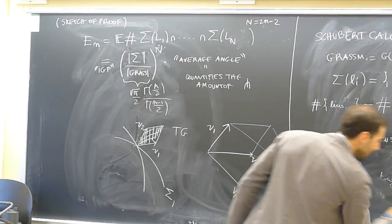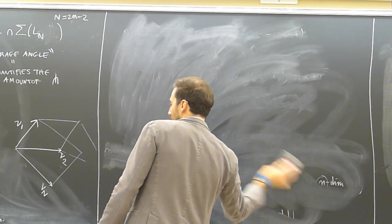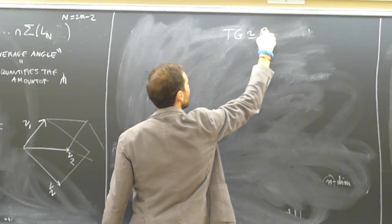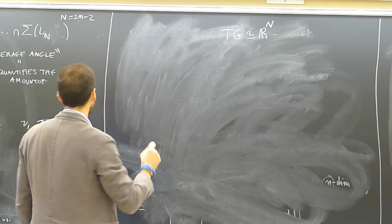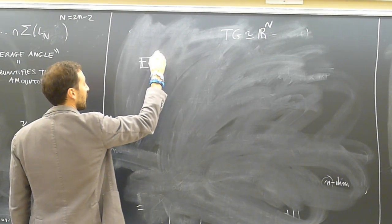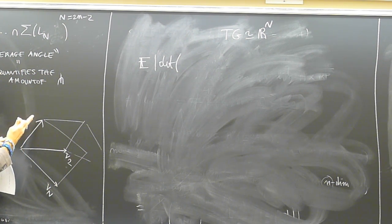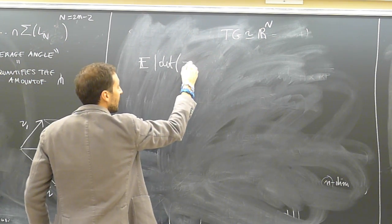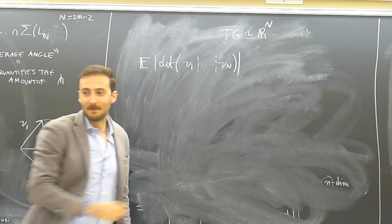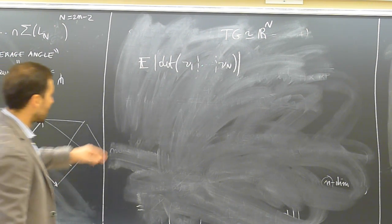The geometry of this step is as follows: we live in the big tangent space of the Grassmannian, which is some big R^n with some structure. We are computing the expectation of the modulus of the determinant of the matrix whose columns are these vectors.